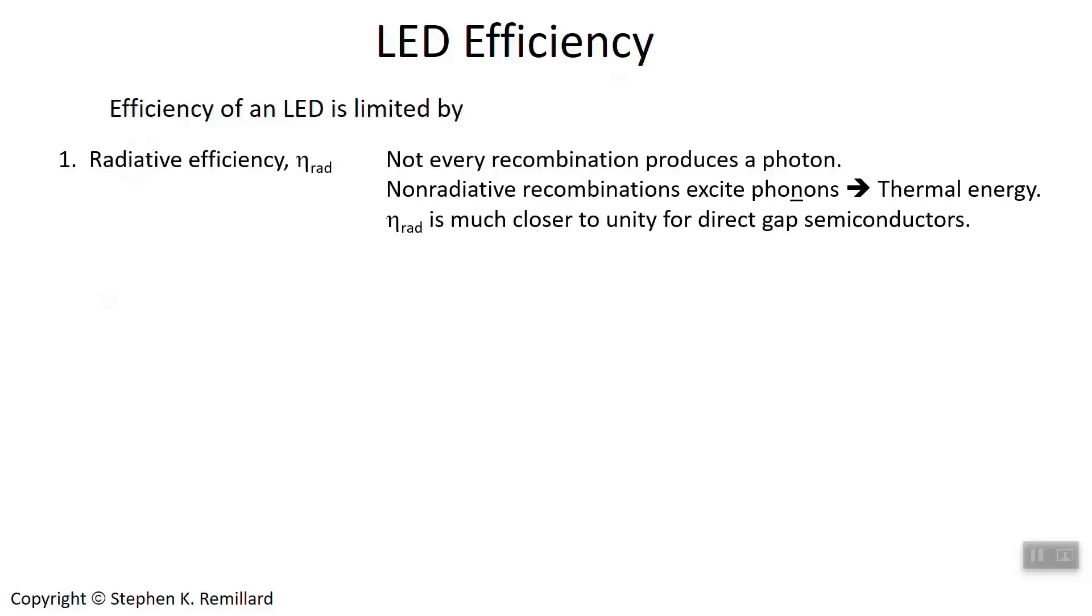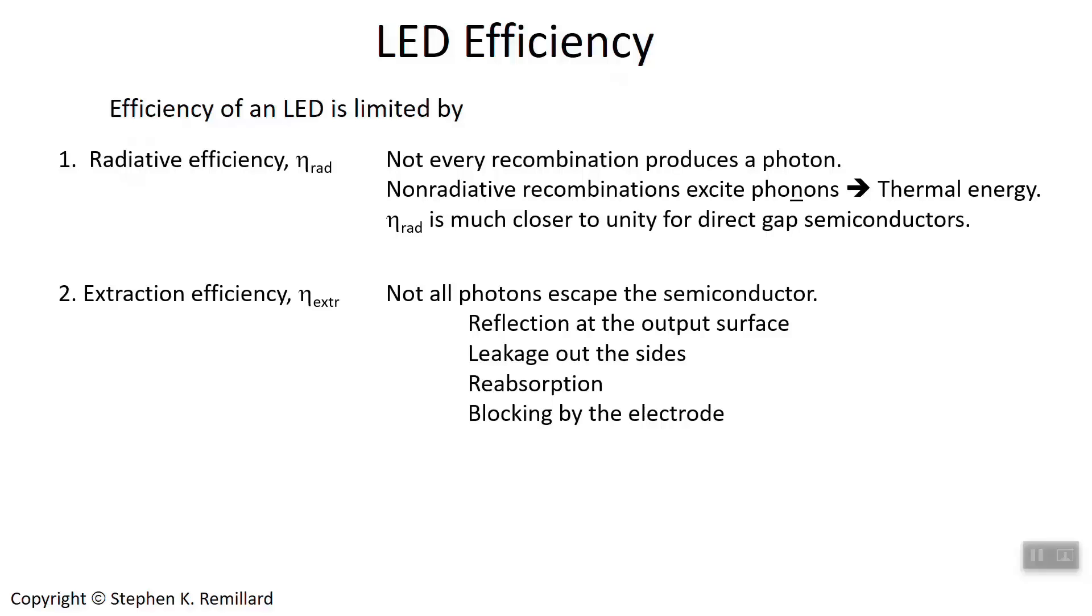Eta is the Greek letter that we use for efficiency. Then there's extraction efficiency, which relates to how many of those photons that do get generated actually make it out of the semiconductor.